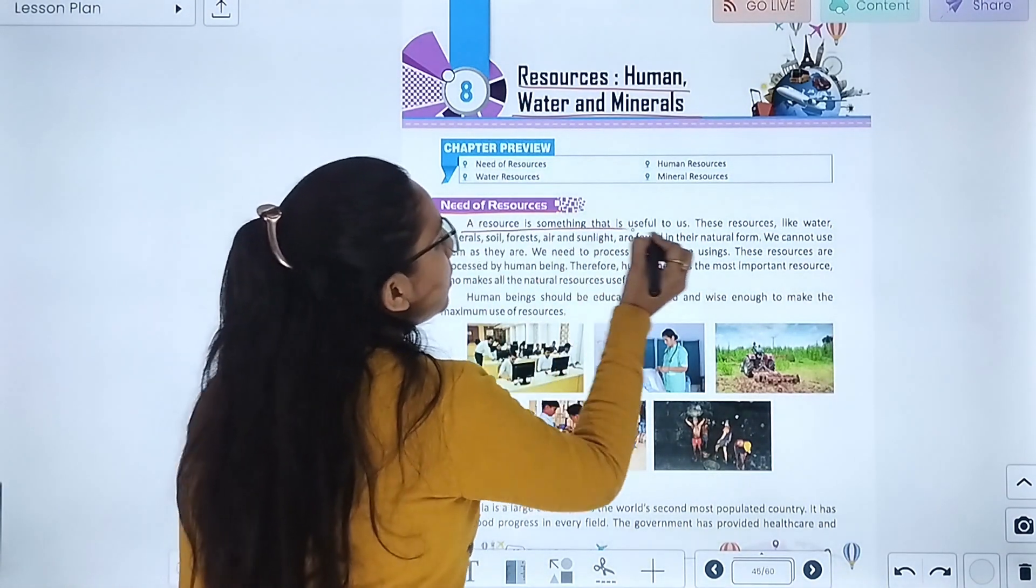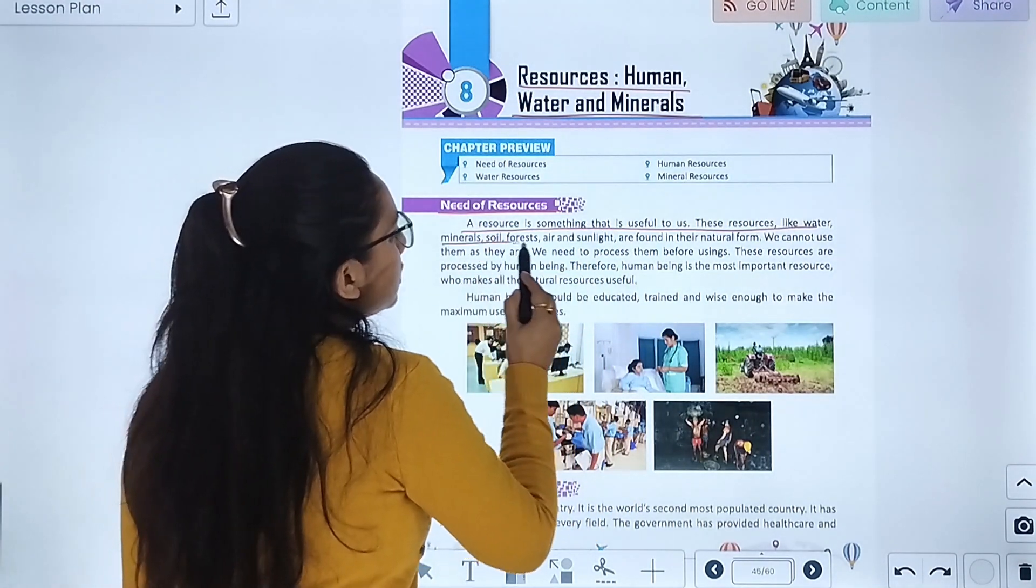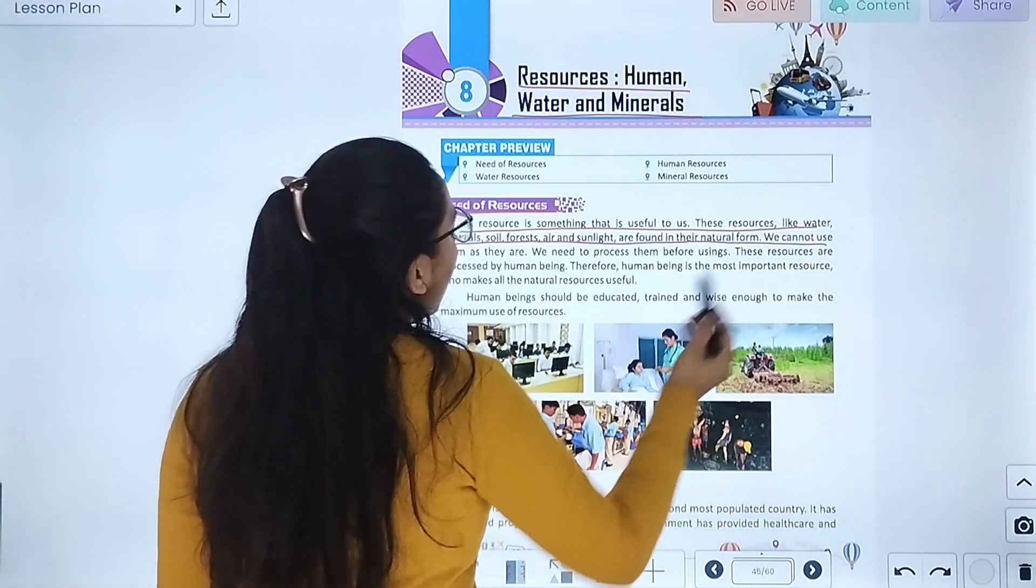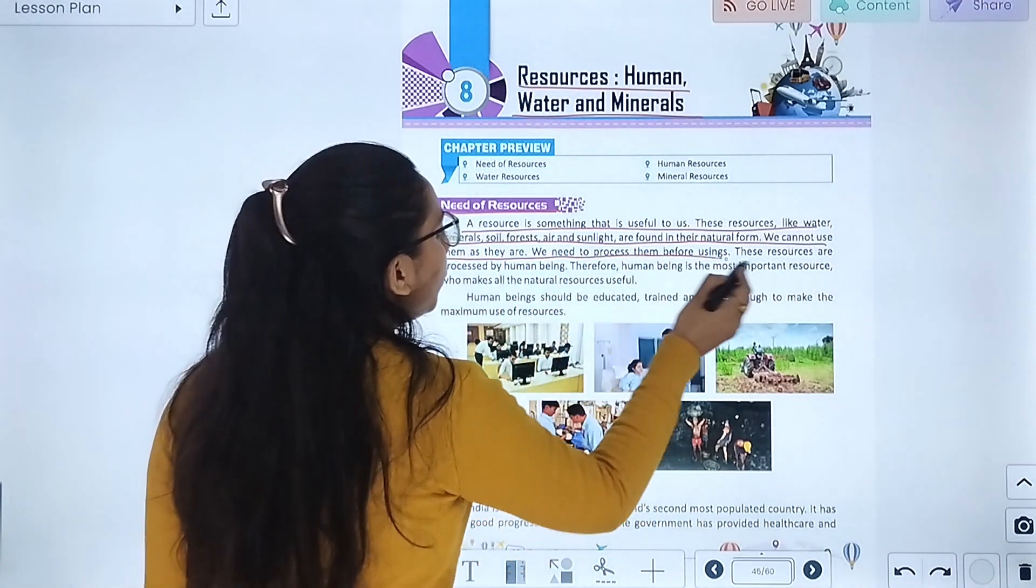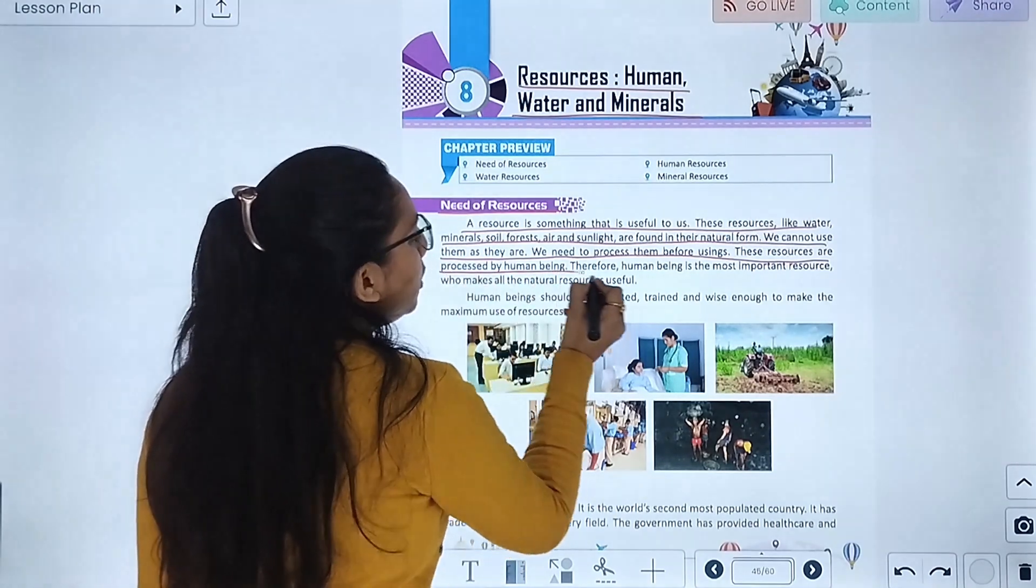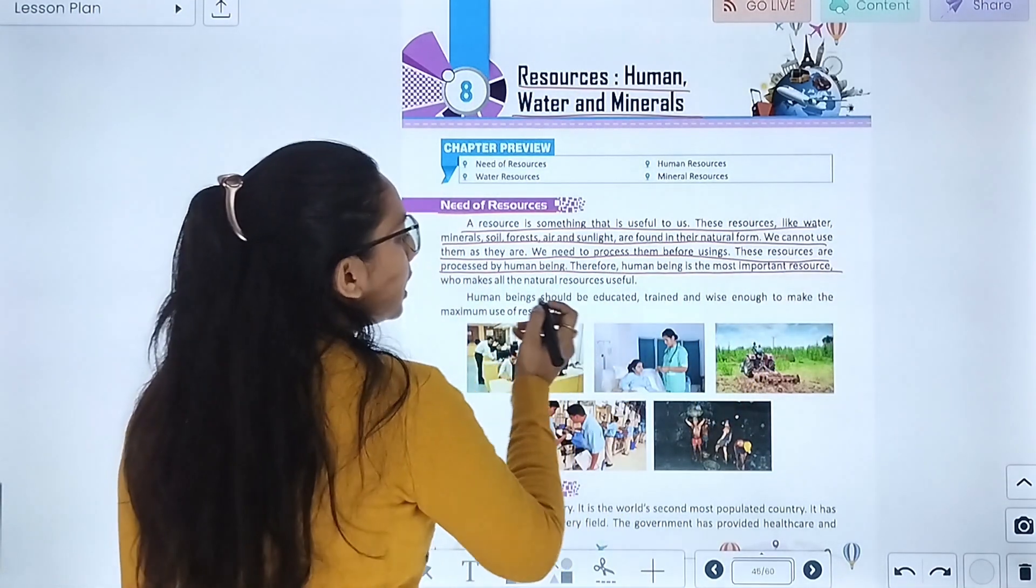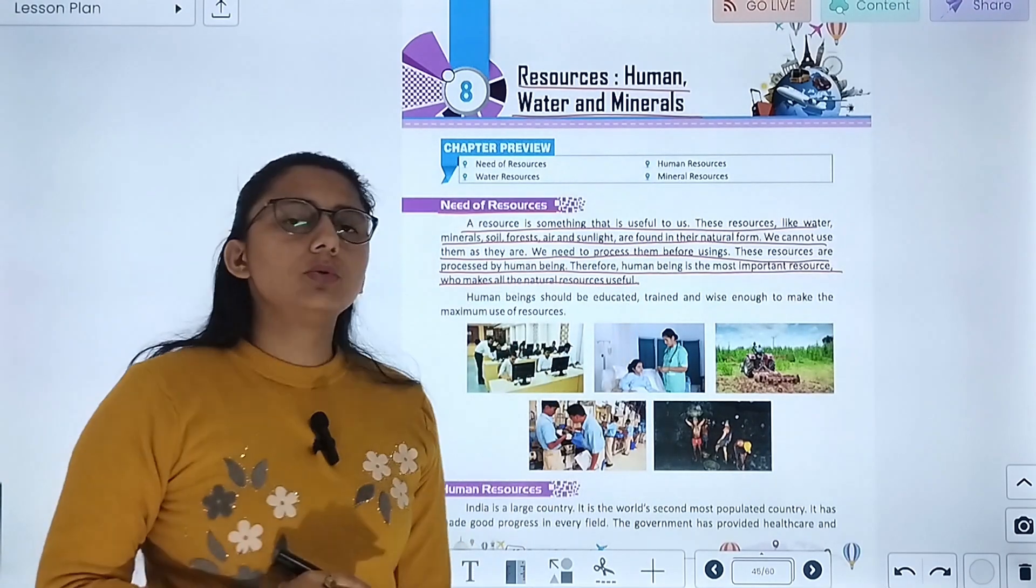A resource is something that is useful to us. These resources like water, minerals, soil, forest, air, sunlight are found in their natural form. We cannot use them as they are, we need to process them before using. These resources are processed by human beings. Therefore, human beings are the most important resource to make all the natural resources useful.